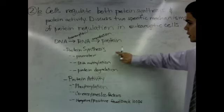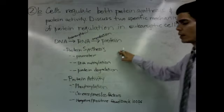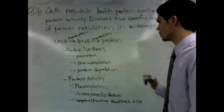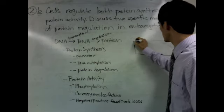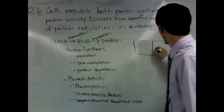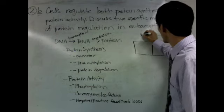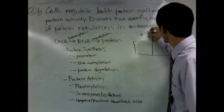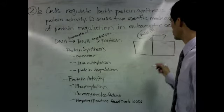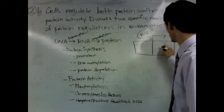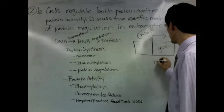Protein synthesis can be regulated by several mechanisms but here are three that are listed. A promoter is a sequence within the DNA that allows for the binding of the RNA polymerase. A promoter sequence then serves to increase the production of mRNA.